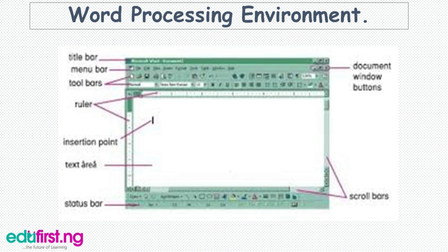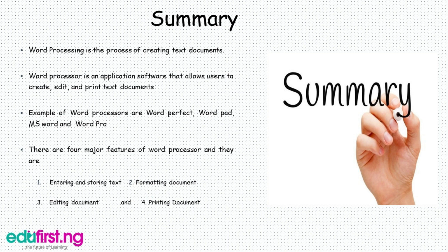In summary: word processing is the process of creating documents; a word processor is the application software that allows users to create, edit, and print text documents. Examples of word processors are WordPad, MS Word, and Word Pro. There are four major features of word processors: entering and storing text, formatting documents, editing documents, and printing documents.